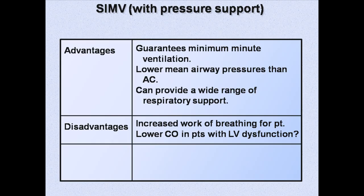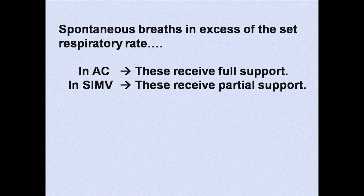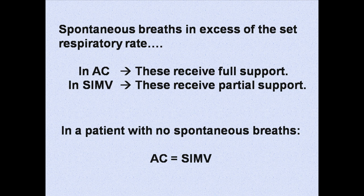The major difference between assist control and SIMV is that in assist control, spontaneous breaths in excess of the set respiratory rate receive full support, while in SIMV, excess spontaneous breaths receive only partial support. Therefore, in a patient with no spontaneous breaths — for example, a patient who is deeply sedated and paralyzed — assist control and SIMV are identical.